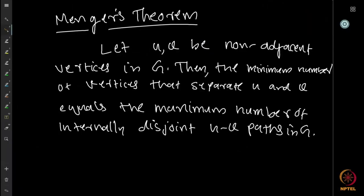Here comes one of the most important theorems we are going to learn in graph theory, which is called Menger's theorem. At the end of this lecture, you will see that this theorem is equivalent to many important theorems in combinatorics — at least seven of them. Each of the seven theorems are basically equivalent to each other, so if you prove one, the others follow easily. They are kind of equivalent results, and this is called Menger's theorem of connectivity.